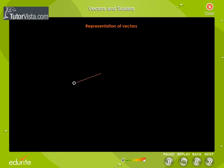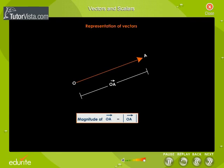The length of the line is equal to or proportional to the magnitude of the vector and the arrowhead shows the direction. The magnitude of the vector is represented as shown and read as modulus of vector OA.